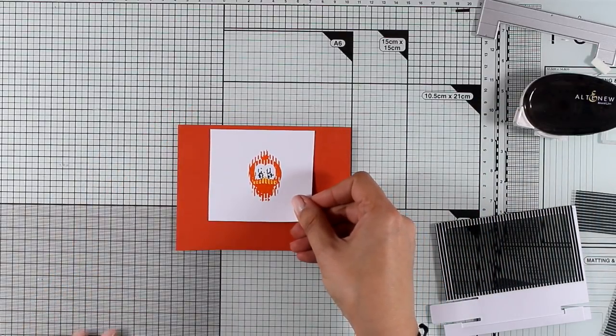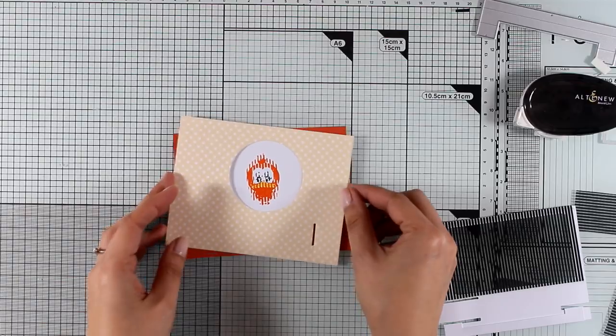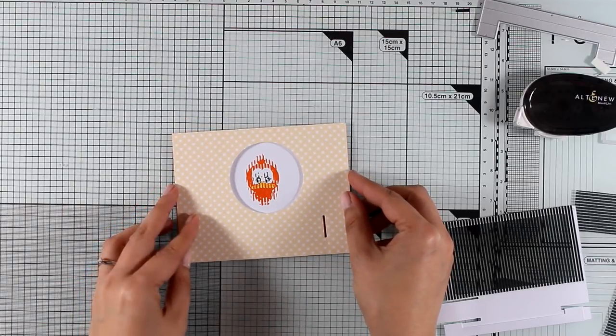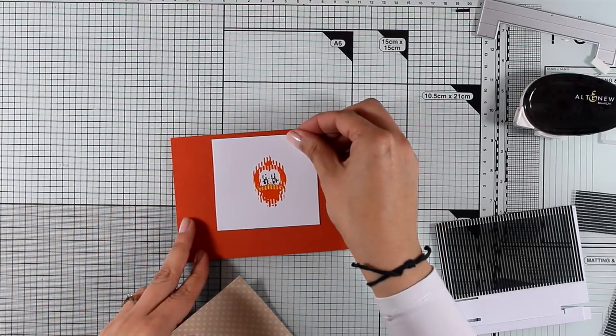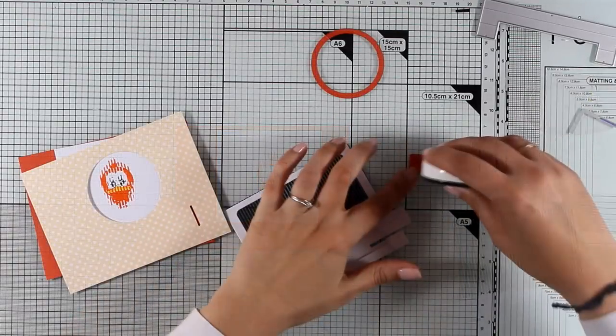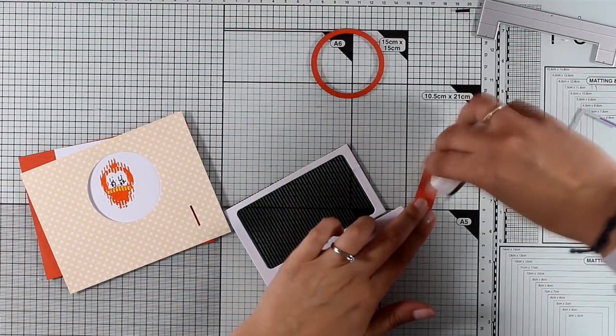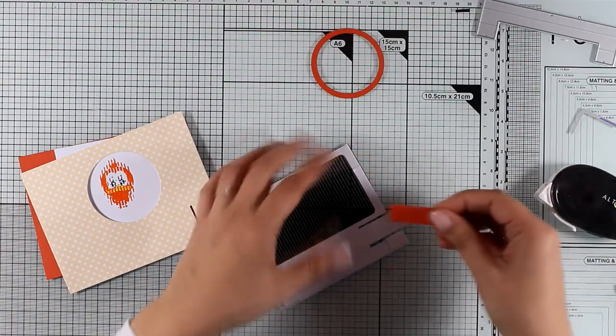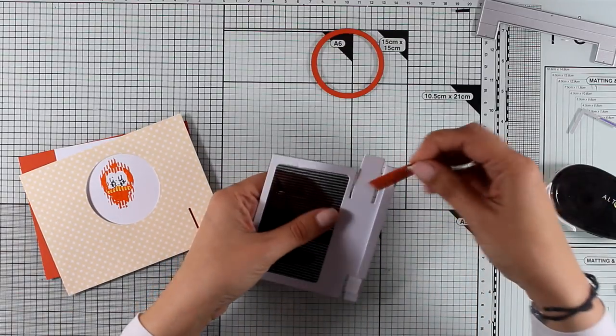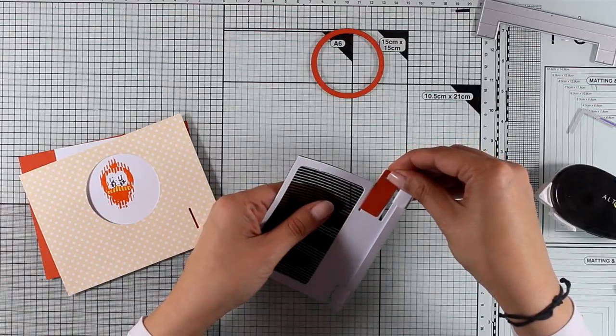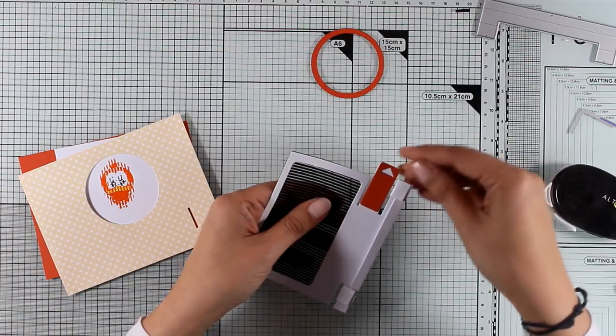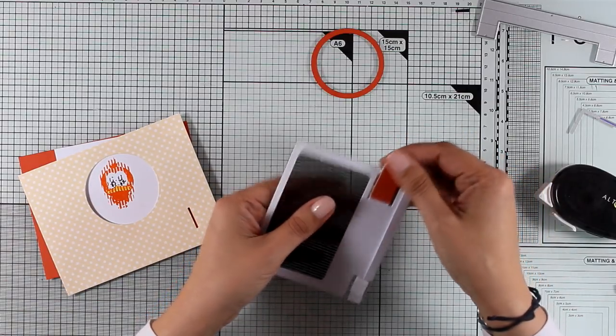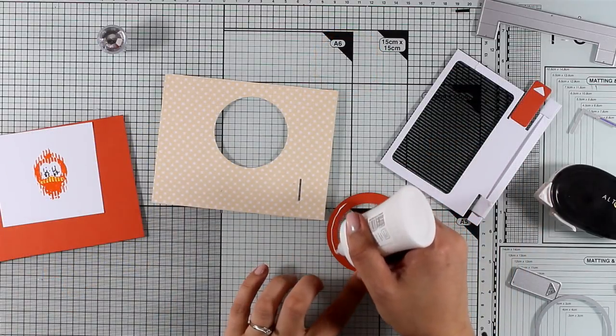I'm going to stick this little guy on top, making sure that he's going to be nice and centered through that window that I cut out. I've also cut out different pieces from the same slider set to embellish my card even more. There are little tabs that you can stick on top of your main tab.